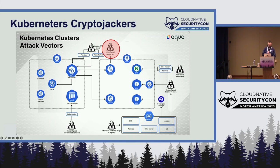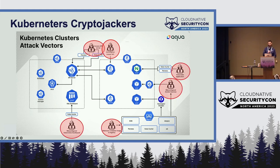Another attack vector is accessing the Kubernetes API when it is misconfigured — the port is exposed with no authentication or access control, giving the attacker cluster-level control. The last one is misconfiguration of the kubelet, which is stored on every node and responsible for communicating with the Kubernetes API. Once misconfigured, the bad actor has node-level control and can execute commands on running containers and deploy new containers. We've also seen those actors leverage Kubernetes features like DaemonSet and ReplicaSet deployments to deploy mining containers at scale across every node.